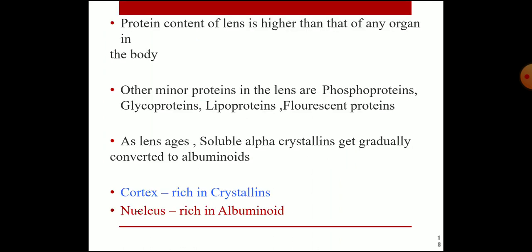The protein content of the lens is higher than that of any other organ in the body. Other minor proteins include phosphoproteins, glycoproteins, lipoproteins, and fluorescent proteins. As the lens ages, soluble alpha crystallins gradually convert to insoluble albuminoids. The cortex is rich in crystallins and the nucleus is rich in albuminoids.